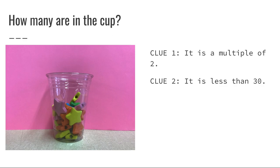Clue number two: It's less than 30. So however many erasers are actually in there, that amount is a multiple of two. It's also less than 30. Clue three: It's more than 15.